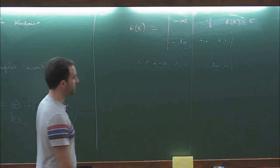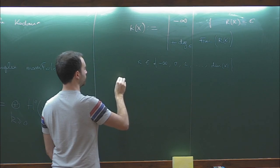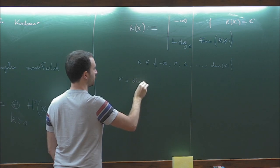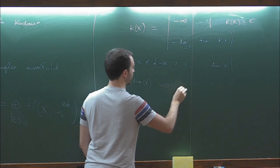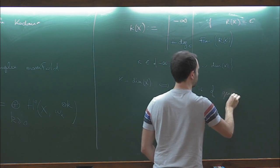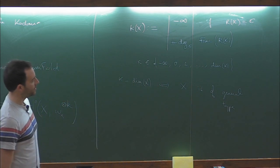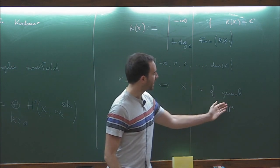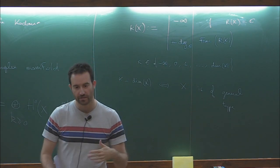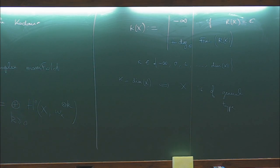By definition, when the Kodaira dimension is maximal — equal to the dimension of X — we say that X is of general type. The idea being that if you are not of general type, there should be some geometric property of your variety explaining why you have fewer pluridifferentials.